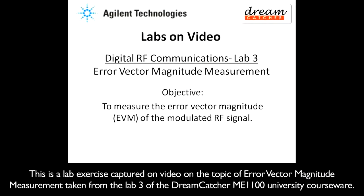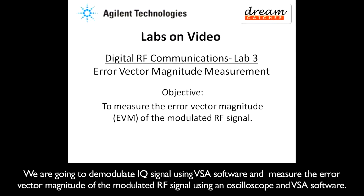This is a lab exercise captured on video on the topic of area vector magnitude measurement, taken from the lab tree of the Dreamcatcher ME1100 University courseware. We are going to demodulate an IQ signal using VSA software and measure the error vector magnitude of the modulated RF signal using an oscilloscope and VSA software.